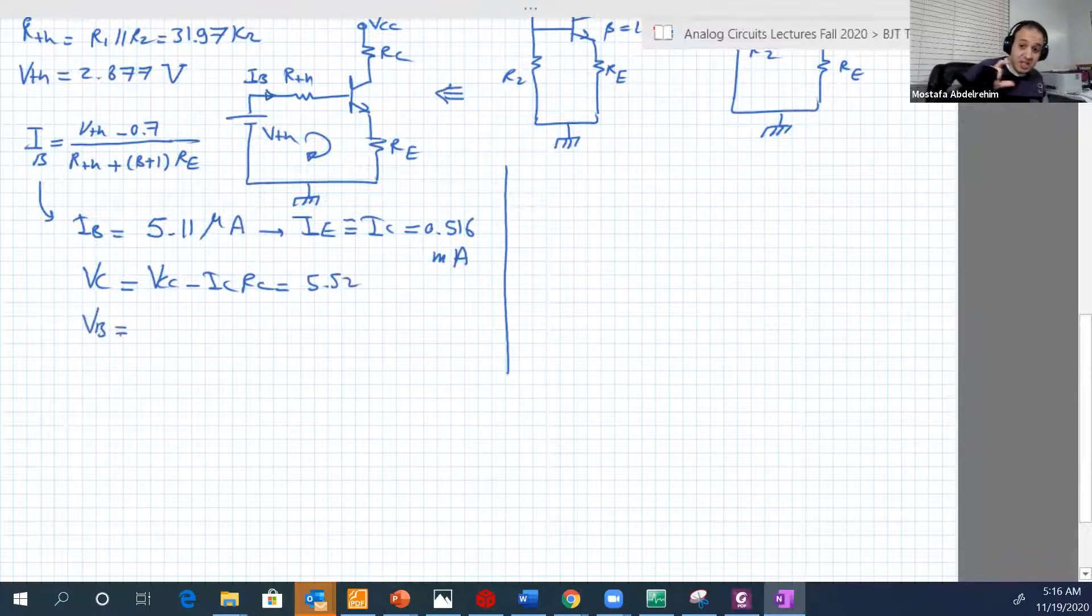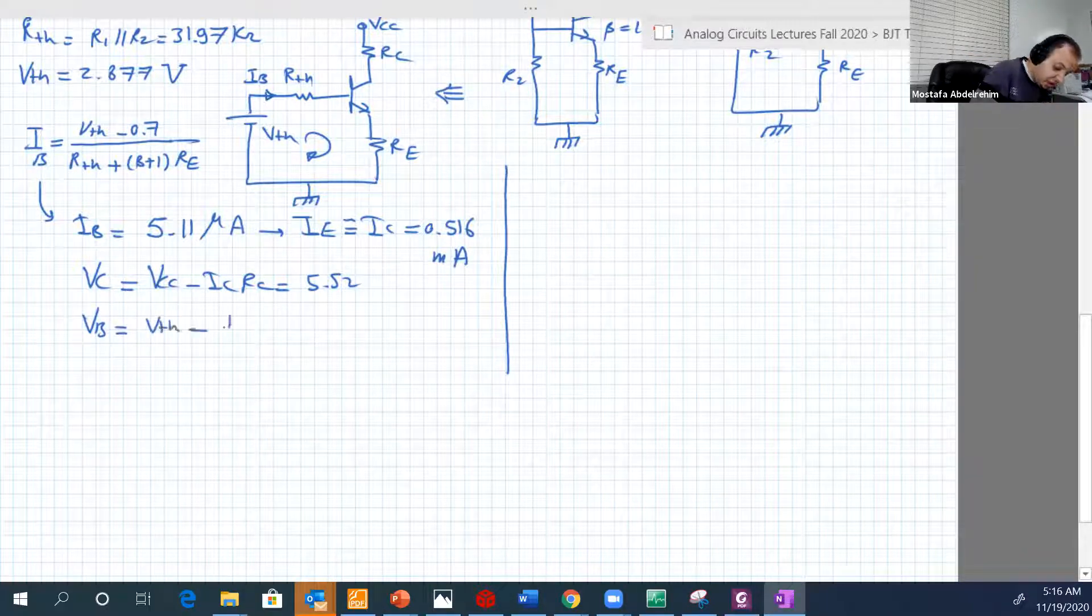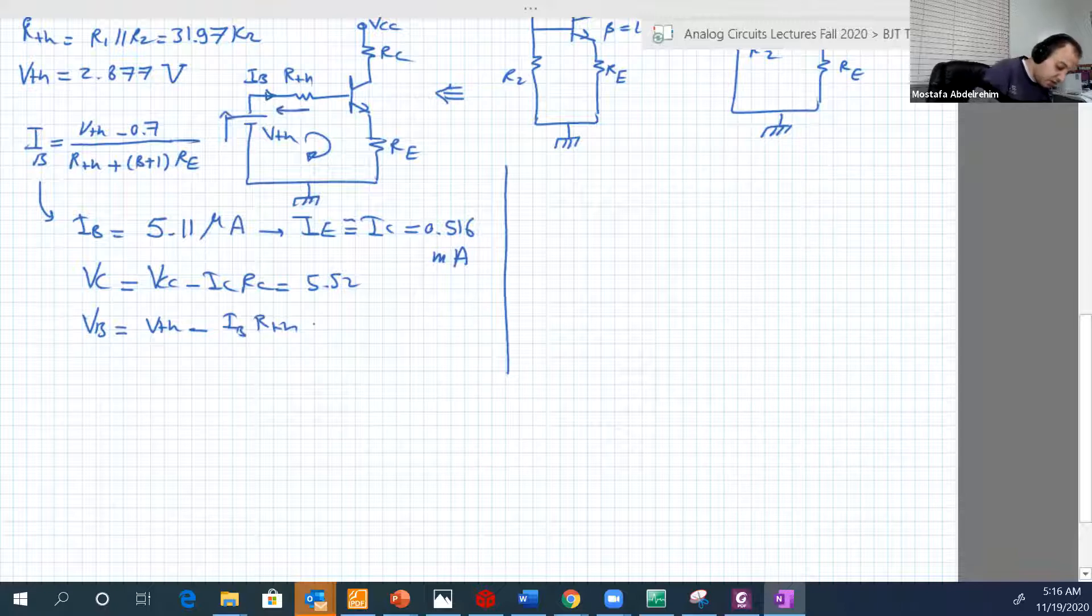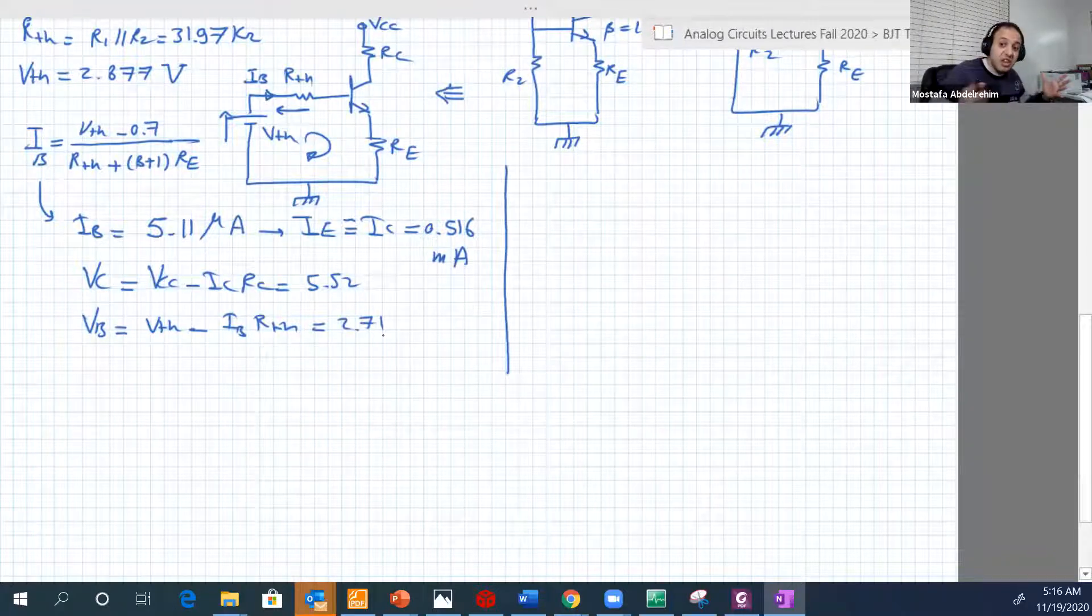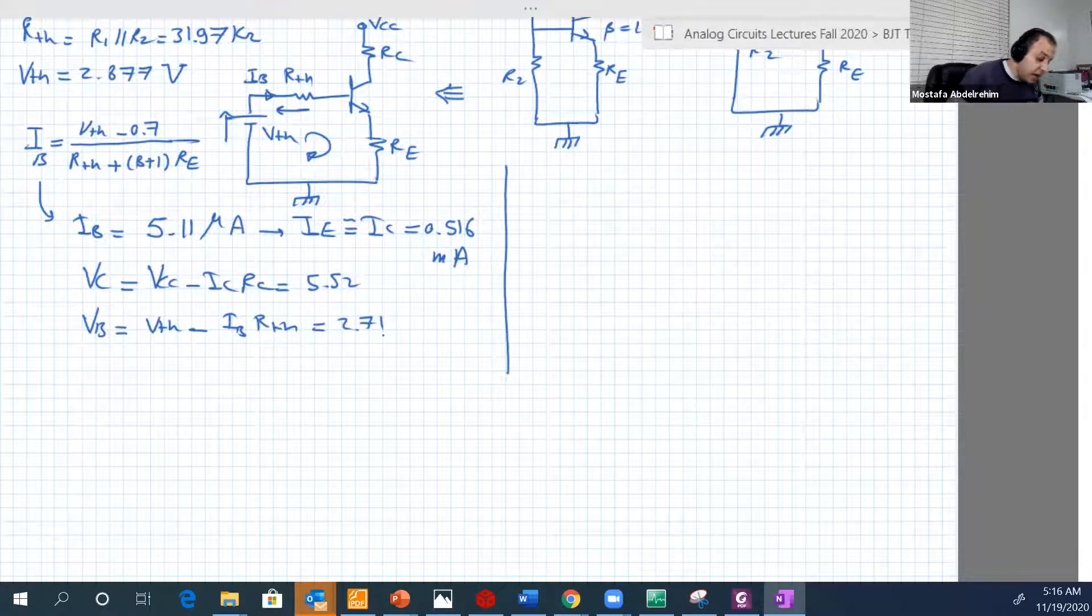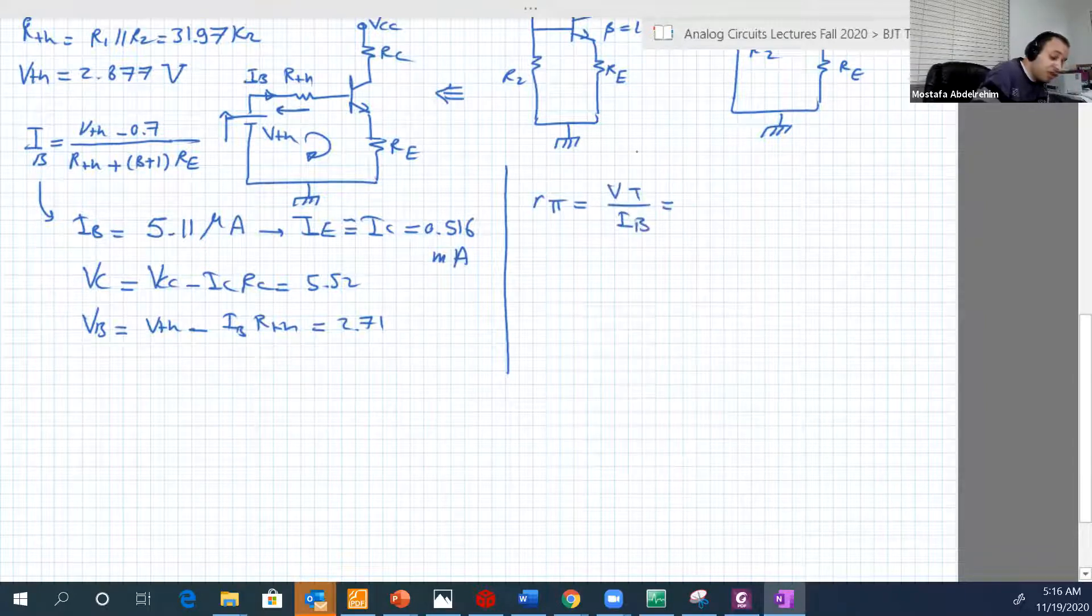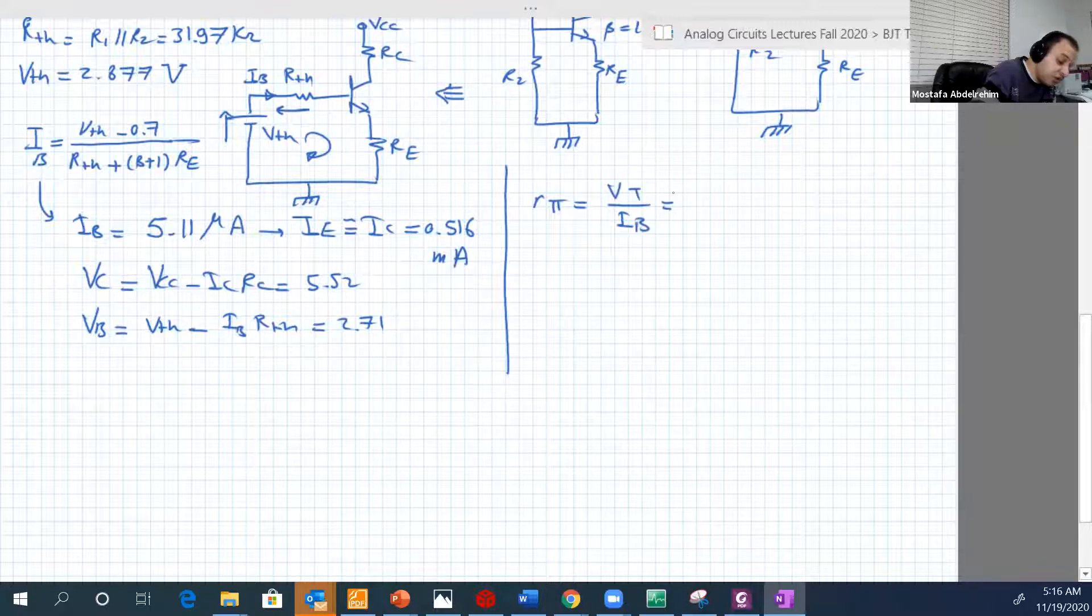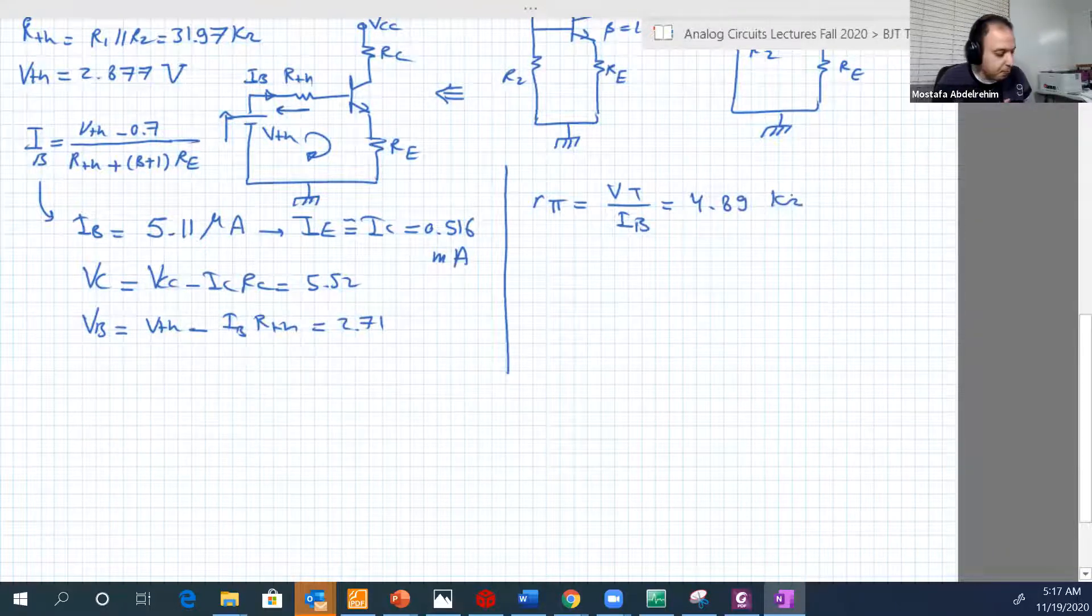We can also determine VB to check that the junction two is reverse. So VB is equal to VTH minus IB RTH. So the voltage here minus the voltage drop across RTH. So this guy will be 2.79. It's very sure that since VC is larger than VB, then junction 2, the junction between the collector and the base is reverse, as expected. And we can determine RE, RE is VT over IB. And VT is 25 millivolts, IB you just calculated. So this will be 4.89 kilohms. Good.